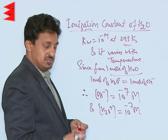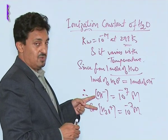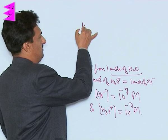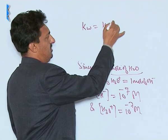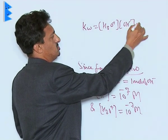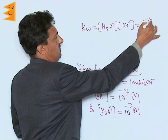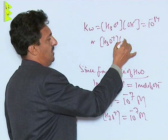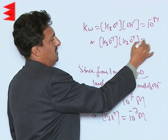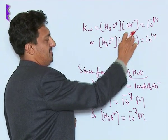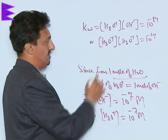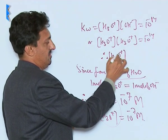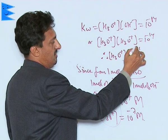How do we get these values? Since the concentrations of these two ions are the same, we can substitute accordingly. We know that Kw = [H₃O⁺][OH⁻] = 10⁻¹⁴. We can write [H₃O⁺] × [H₃O⁺] = 10⁻¹⁴ because the concentrations are equal, so it becomes a square. Therefore, the concentration of H₃O⁺ comes out to be 10⁻⁷.